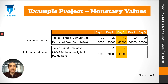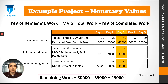Let's look at our example project from the perspective of monetary values. On day 3, we had planned to complete 40 tables — the monetary value was $40,000. But in fact, we completed only 35 tables and the earned value came out to be $35,000. So 45 tables are still to be built, and the monetary value of these tables is $45,000.